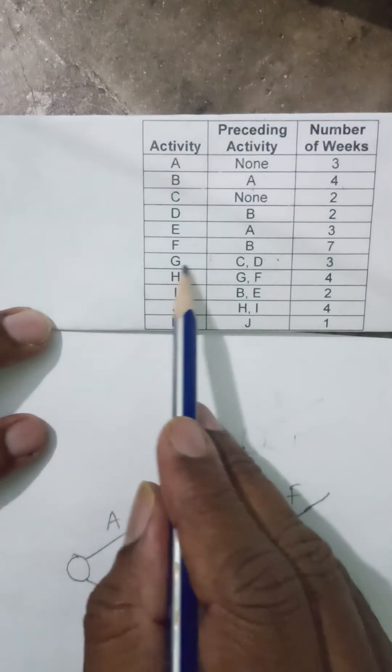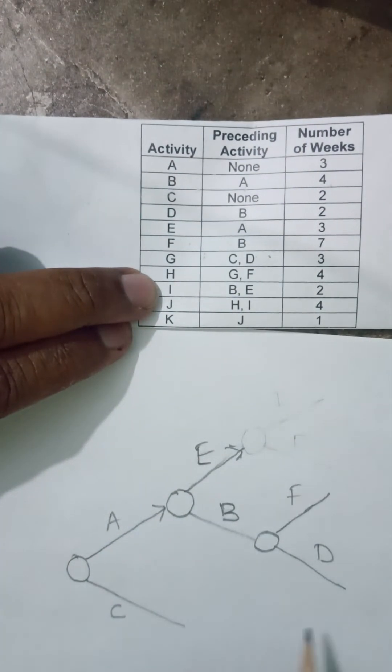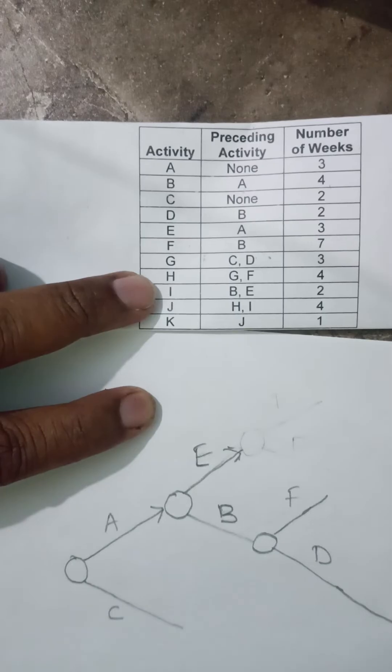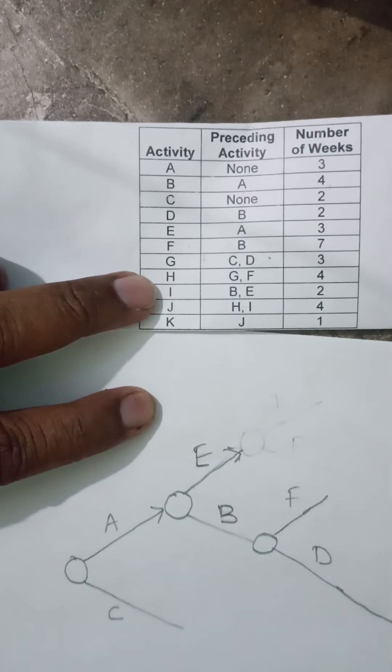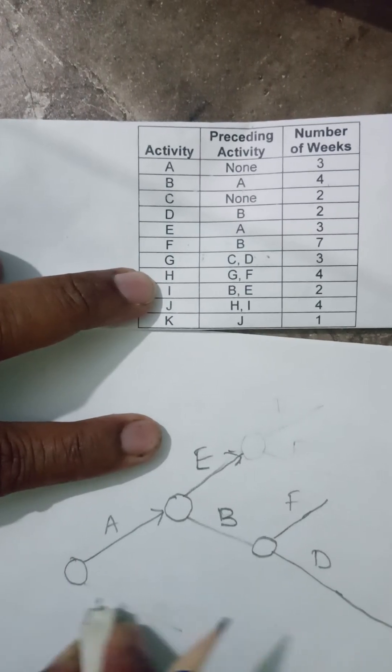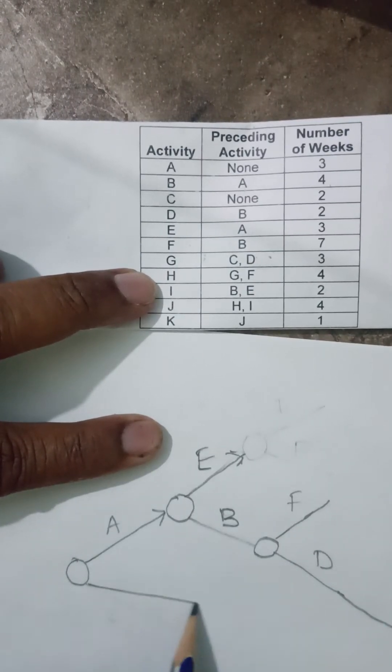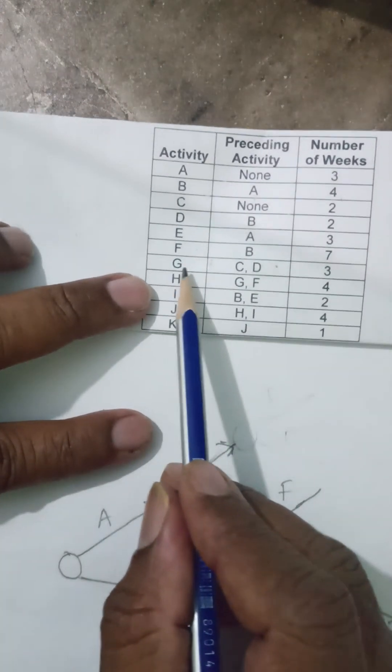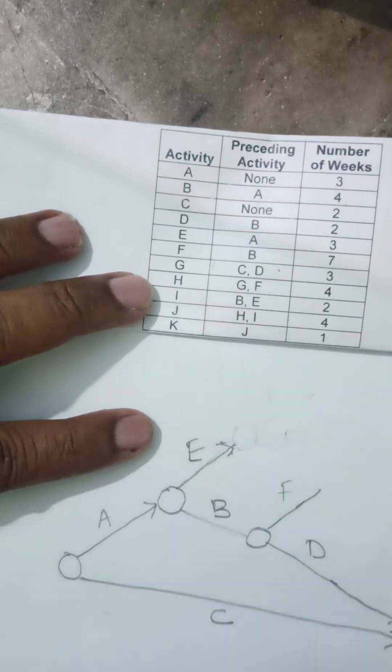G is starting from C and D. Somewhere C and D can come together. Maybe I will extend it further, and from there my G will start. I can just simply connect this. This is my C, this is my D, and my G is starting from here. G is starting from C and D.